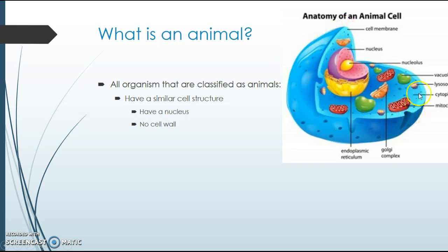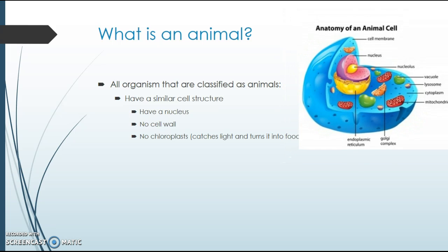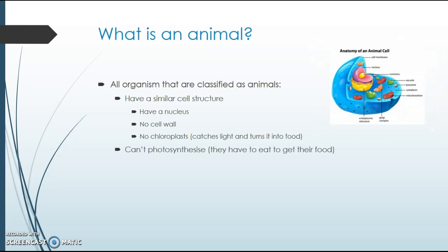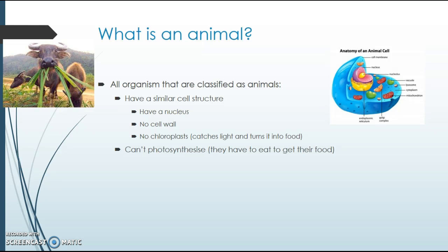No cell wall, just a cell membrane around the outside. And no chloroplasts. Chloroplasts are special organelles which catch light and turn it into food for the plant — for plants, I should say, because we're not dealing with a plant, we're dealing with an animal here. What this means is that animals can't do photosynthesis. Instead, they have to eat to get their food, like this cow or buffalo.